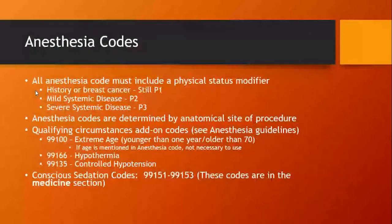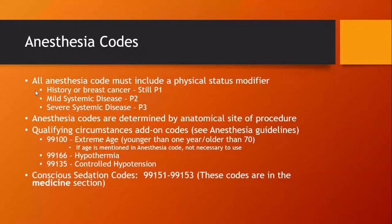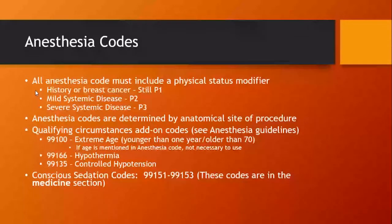Some of the things you're going to want to know before going into this exam: anesthesia codes all must have a physical status modifier. A patient with a history of breast cancer is still going to be P1 — it's not there anymore, so it's not an extreme status. Mild systemic disease is P2, severe systemic disease is P3.